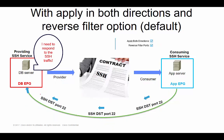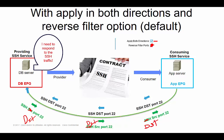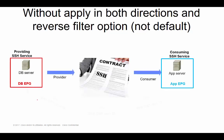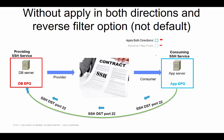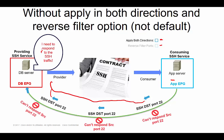If you leave the first option checked but uncheck 'reverse filter ports,' the other device can send traffic destined to port 22, but it cannot respond. SSH would not actually work, because the App server can send traffic destined to port 22, but the database server in the DB EPG is not allowed to send traffic sourced from port 22 — so it can't respond. If you uncheck both options, you get only unidirectional communication: the App EPG can send to port 22, but the DB device cannot respond on source port 22.